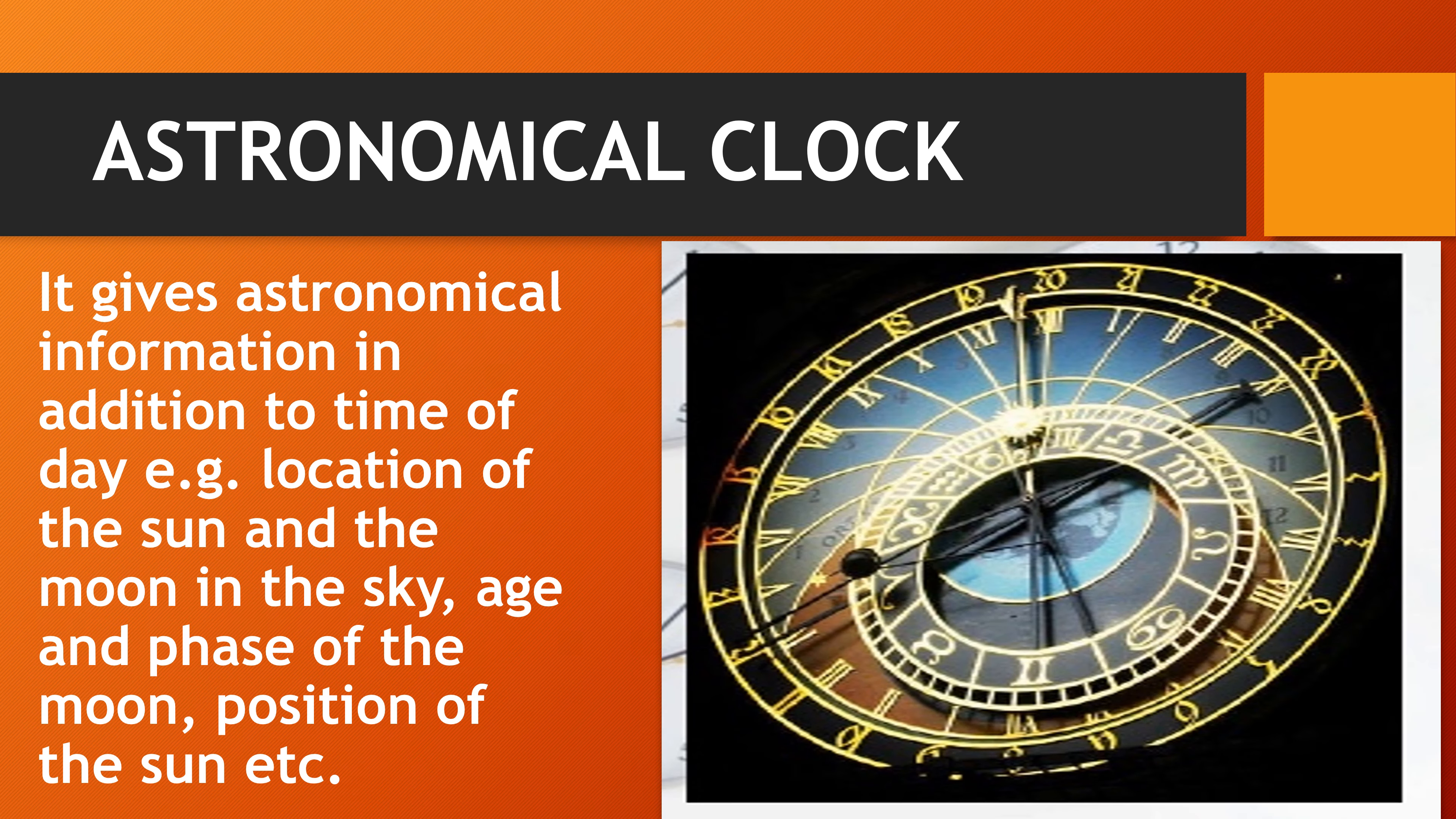A unique clock, that is astronomical clock. It gives astronomical information in addition to time of day. For example, location of the sun and the moon in the sky. Age and phase of the moon, what is the phase of the moon in the sky and what is the age, means how many days has passed of the moon. Position of the sun, etc. So it is very important clock.